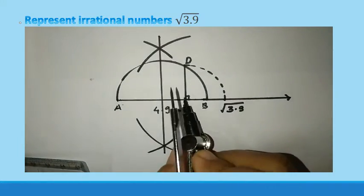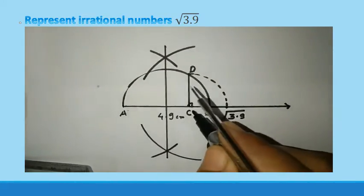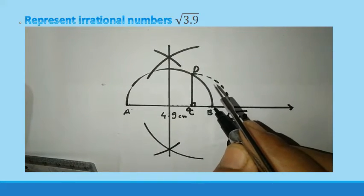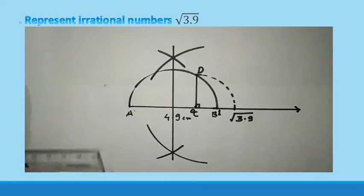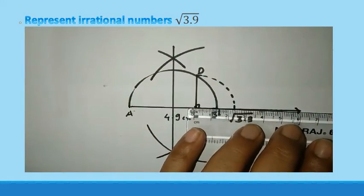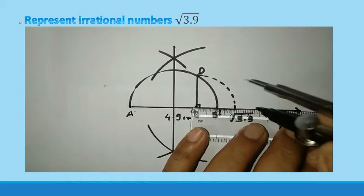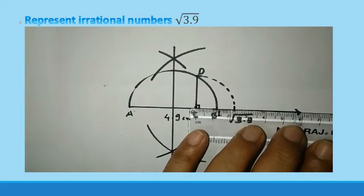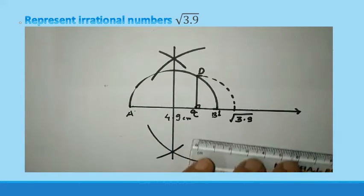Now here C means 0. C means 0. And B means 1 and so on. So you can locate 0. This is 0, 1. See here 2, 3, 4, 5, 6 like this. You can also locate your points.